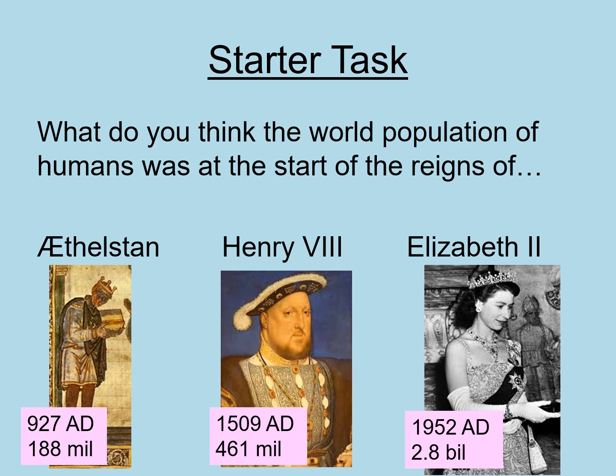Here are the approximate answers. King Aethelstan was the first British King to rule England as a whole rather than in different regions, and that was in 927 AD. The population of the earth at that time was 188 million — a really small number compared to today. To compare, the population of Pakistan is currently about 212 million, so there were fewer people alive in the whole world when Aethelstan was king than there currently are living in just one country, Pakistan.